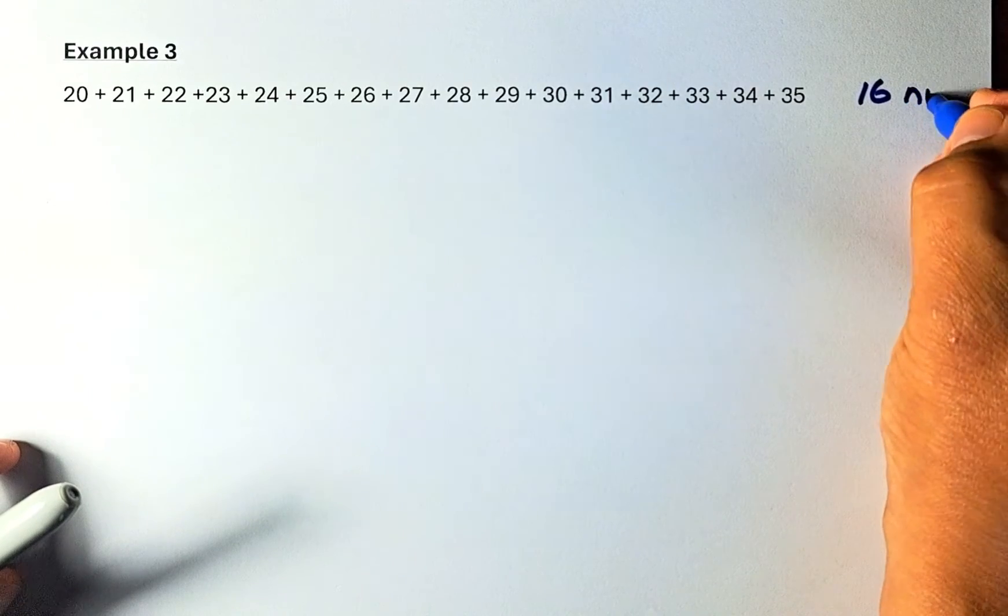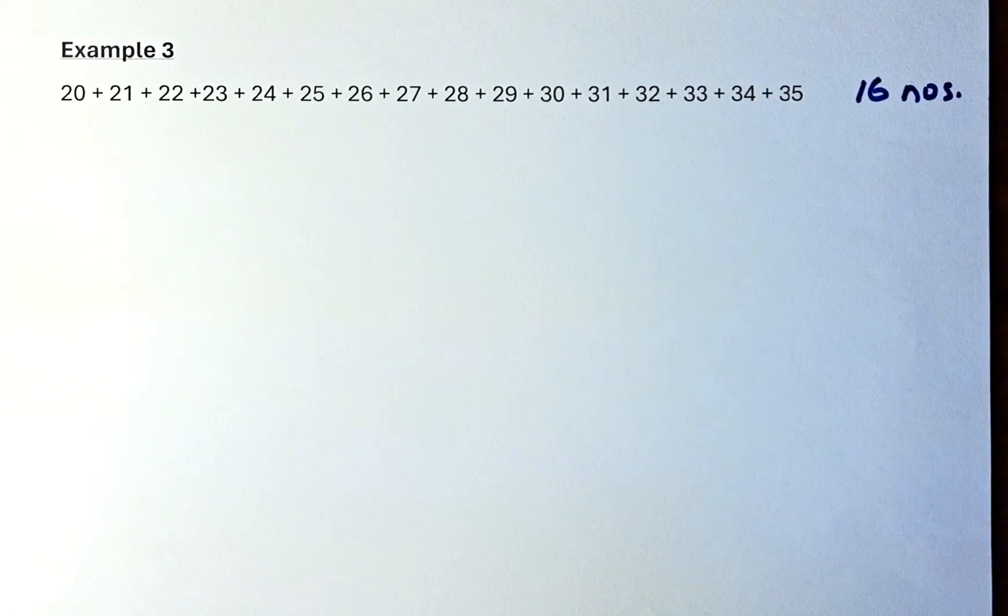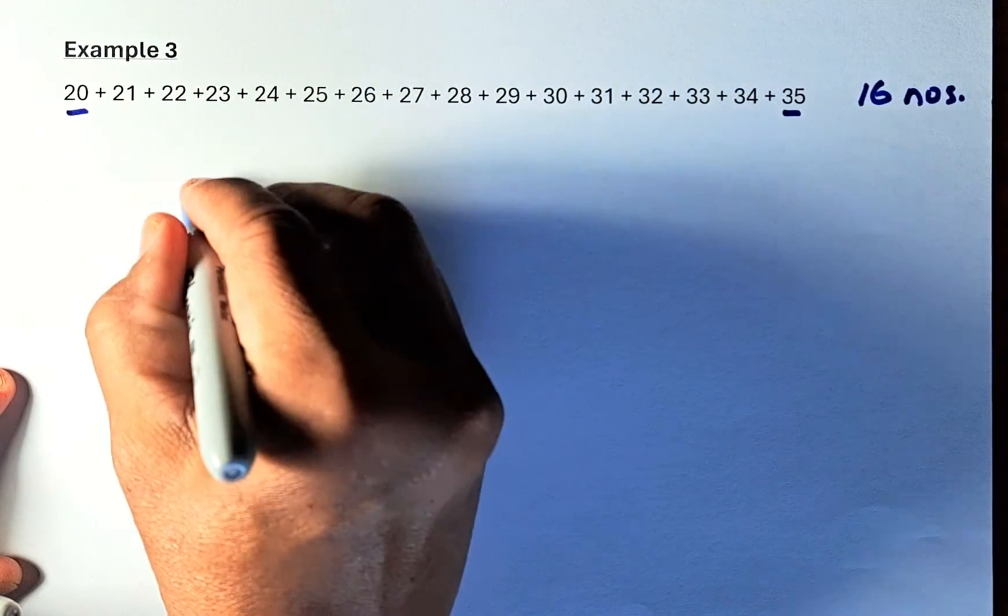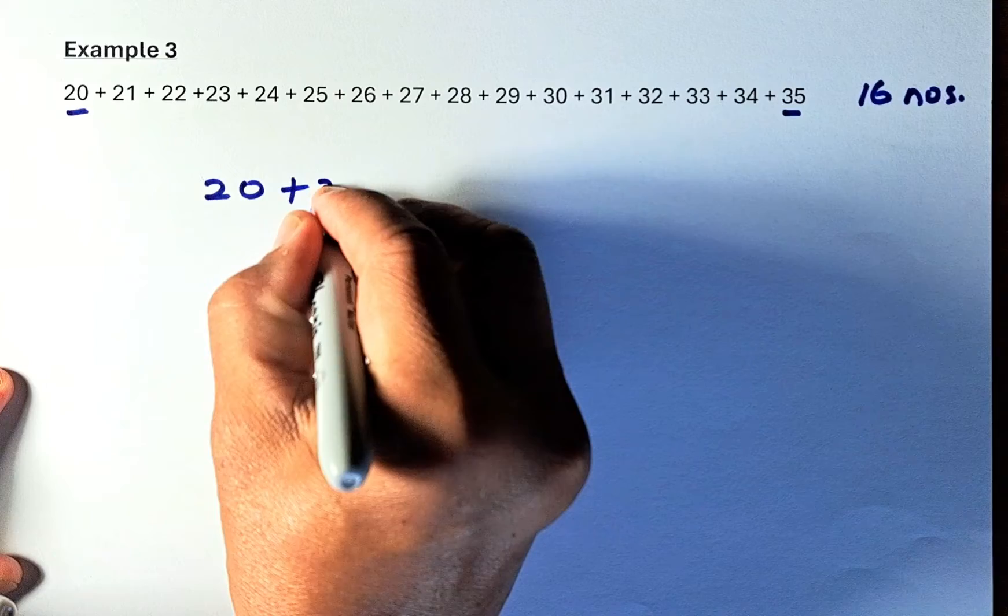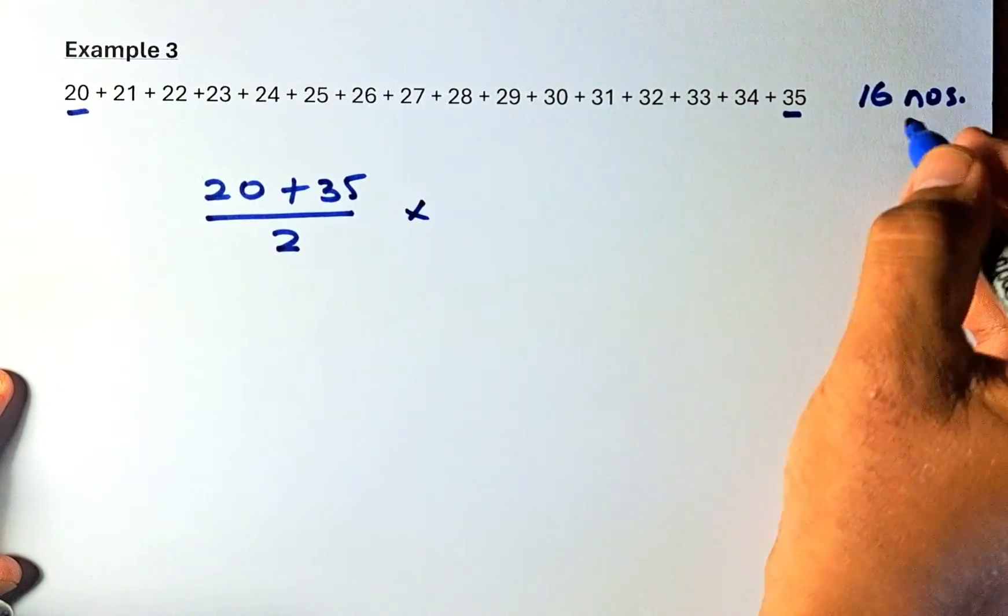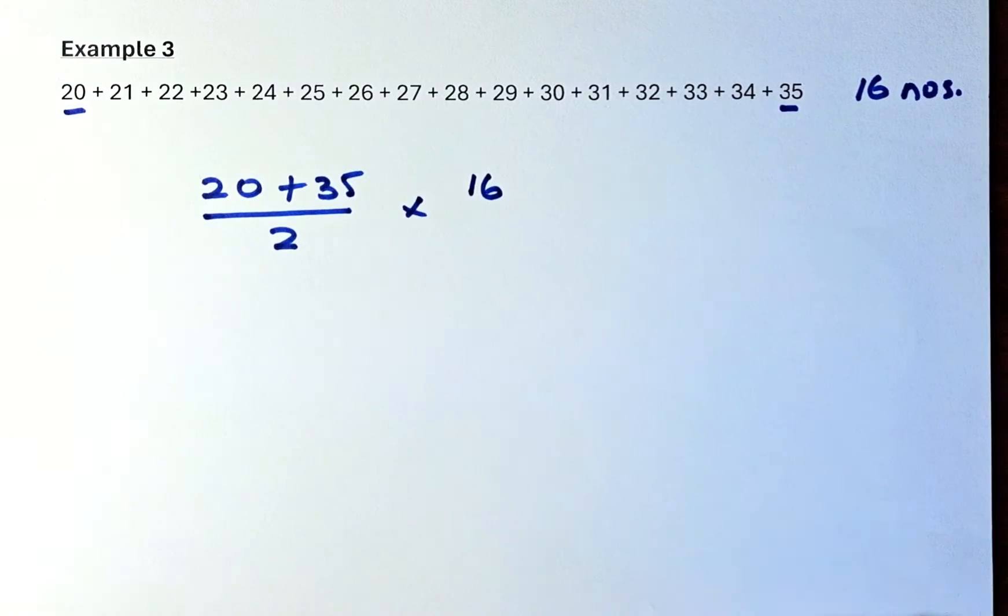16 numbers and then rather than using your calculator, as I told you before, what you are going to do, you get the first number and the last number, so you get 20 plus 35 and then you need to divide by 2 and then you multiply by 16 numbers because there are 16 numbers together.